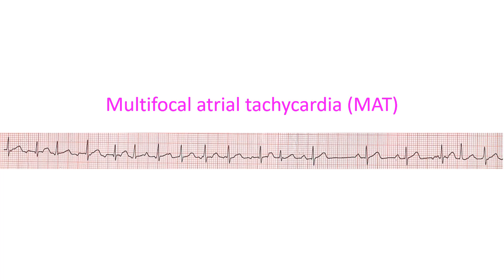If supraventricular ectopics occur at a rate above 100 per minute with 3 or more different P wave morphologies, it is known as multifocal atrial tachycardia (MAT), also called chaotic atrial rhythm. MAT can occur in those with chronic obstructive pulmonary disease.